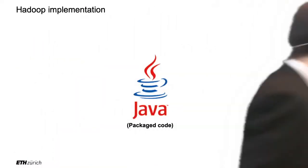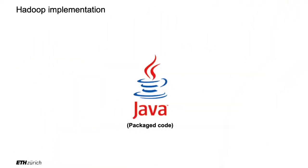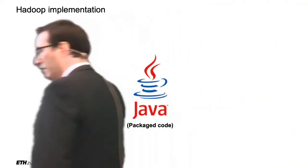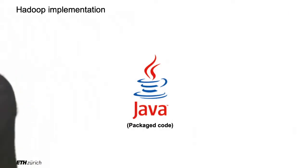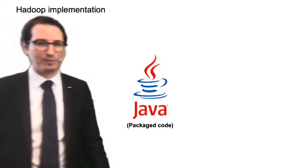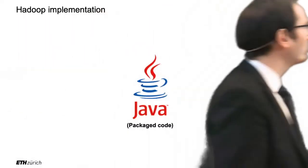We've seen that Hadoop is on a centralized architecture with the name nodes and the data nodes, and what we are going to do next is go into the details of that. The implementation of Hadoop is all done in Java — that's the native language of HDFS and the same format we use. Of course, there are APIs that allow you to access it from many other languages.